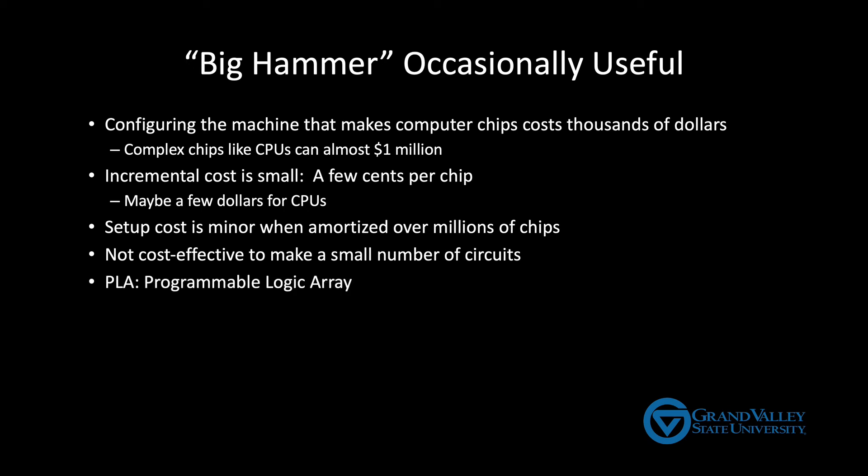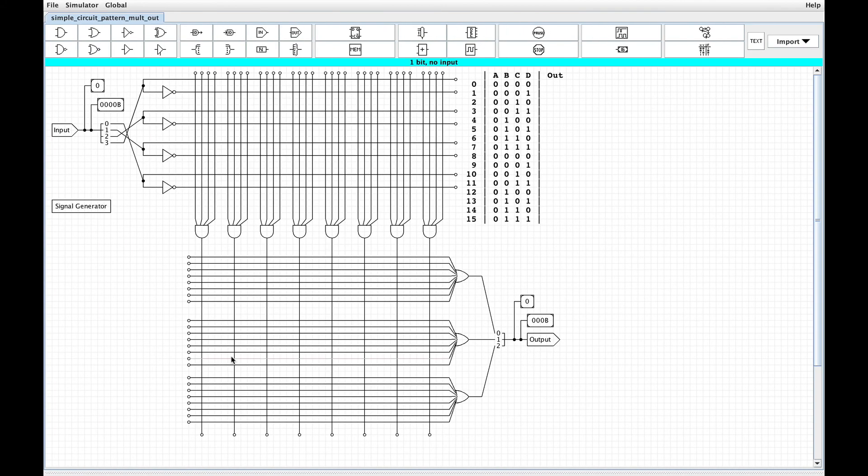You use something called a programmable logic array, which is a chip laid out like the big hammer technique, right? It's a chip that's laid out like this with wires and NOT gates connected to the inputs and a series of AND gates and then a series of OR gates for the output. And so what you'll do is you'll set up your chip making machine with this pattern of wires and gates in it, but notice that none of the wires are connected. But you can still pay that big cost to set it up and you can produce your chips like this. They don't actually do anything, but you set them up in a special way that when somebody buys the chip, they can come in to their own production facility and then make the connections they need. They're doing the equivalent of something like this where they'll connect the input wires to the AND gates as needed for the particular circuit they're building.